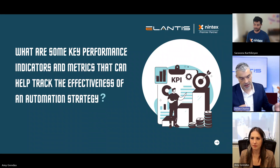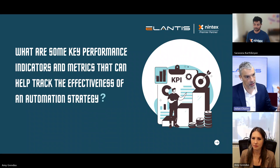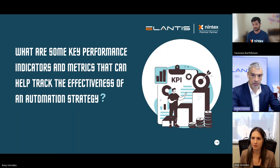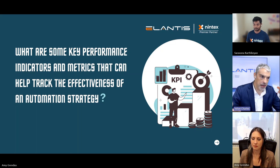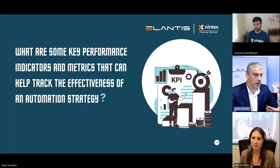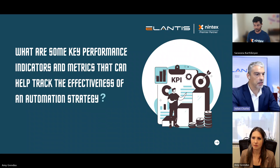Cycle time reduction is a key metric, but it's also about error rates — reduction in human errors. We're human, we make errors, and reducing them can significantly improve quality and efficiency. That metric combined with your ROI basically helps to justify the automation efforts back to the stakeholders.